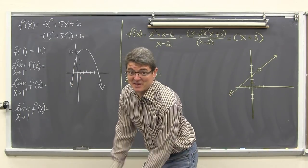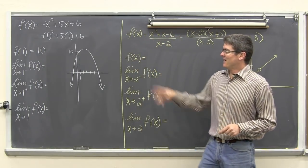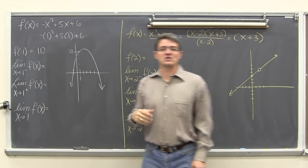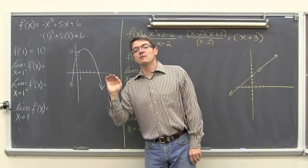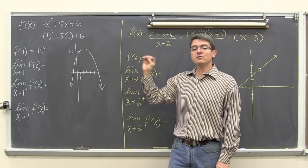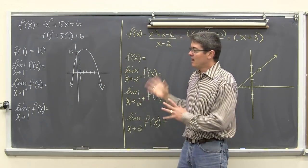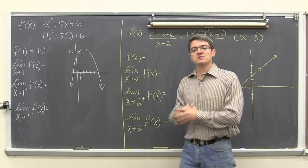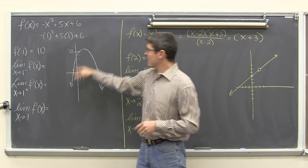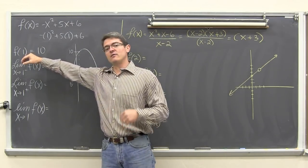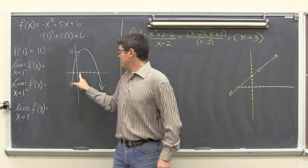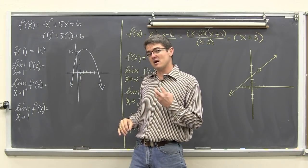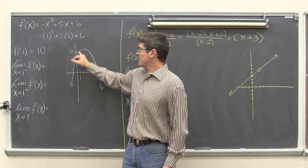Let's do five examples. Here I have y = f(x) equal to negative x squared plus 5x plus 6. This is a parabola opening down with a negative leading coefficient. It is a polynomial — one variable, all positive whole number exponents — so it is a smooth polynomial function. Here is the parabola opening down. I want to look at the value of the actual function and the values of the limits.